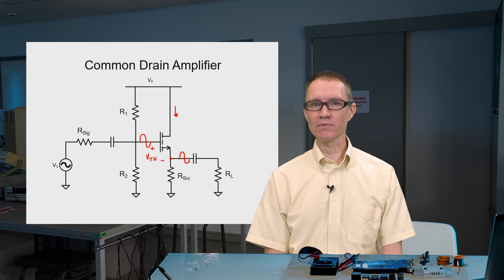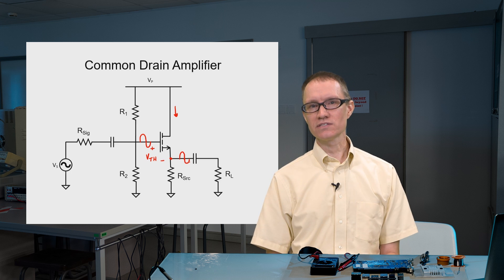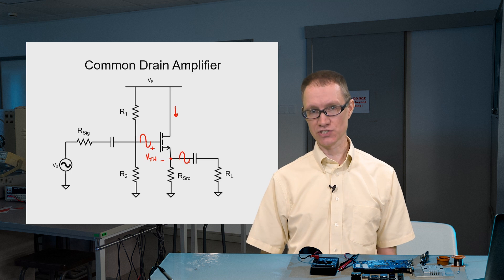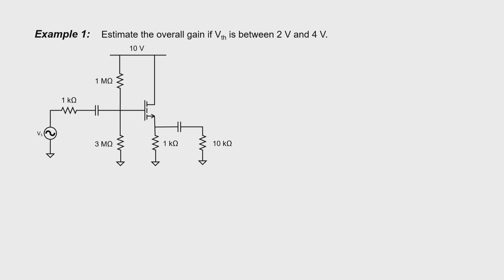Let's work some example problems to see how you can find accurate expressions for the gain. Here we're going to be estimating the overall gain if we don't know the threshold voltage very well, and that's really typical with MOSFET circuits. First, let's do a DC analysis to make sure that this transistor is in saturation.